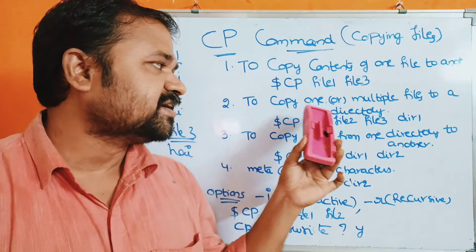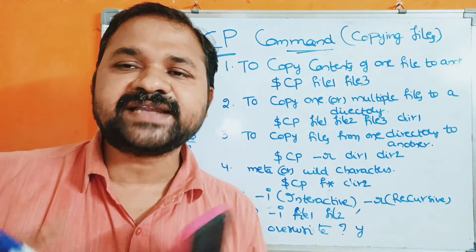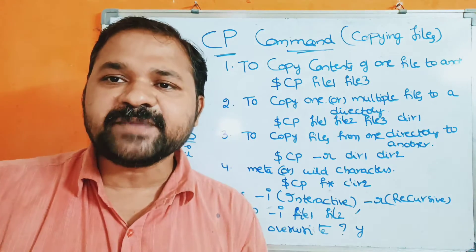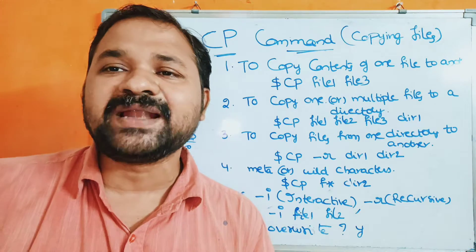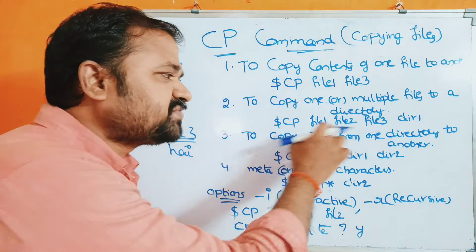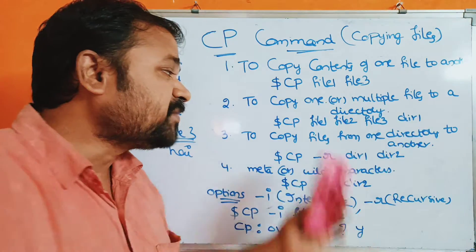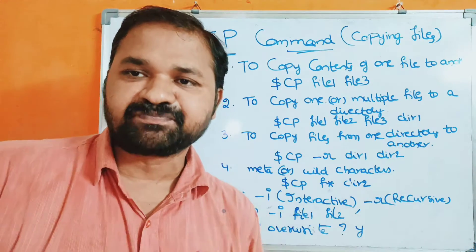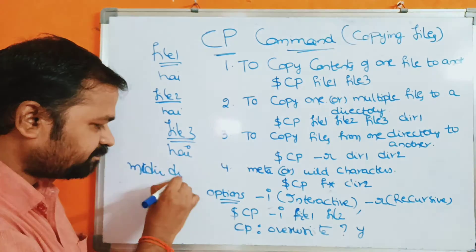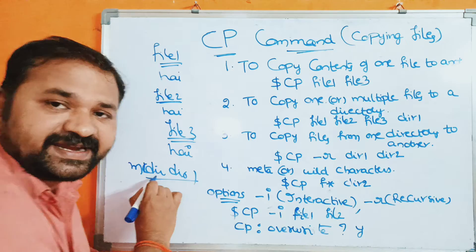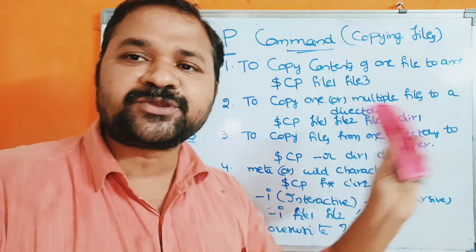The second advantage is we can copy one or multiple files to a directory. A directory is a collection of files and may also contain subdirectories. Here we have three files: file1, file2, file3. Before executing the cp command to copy them to directory1, we must first create the directory using: mkdir directory1. Then when the cp statement is executed, file1, file2, and file3 will be copied to directory1.